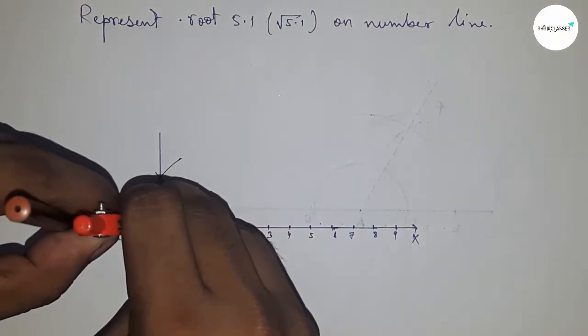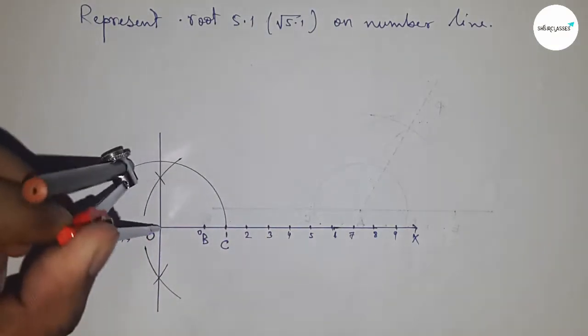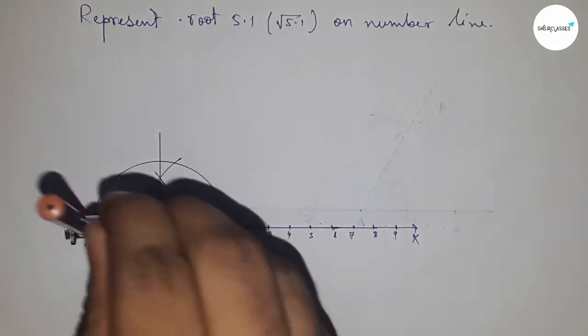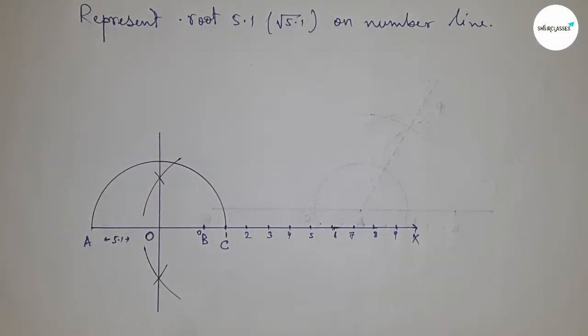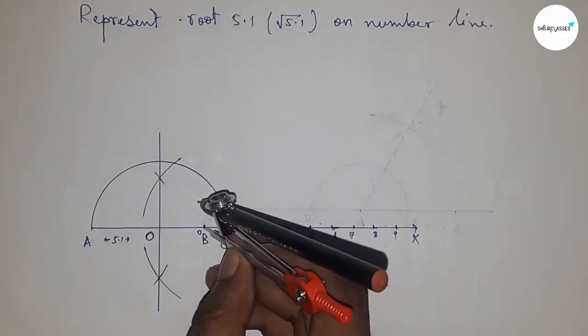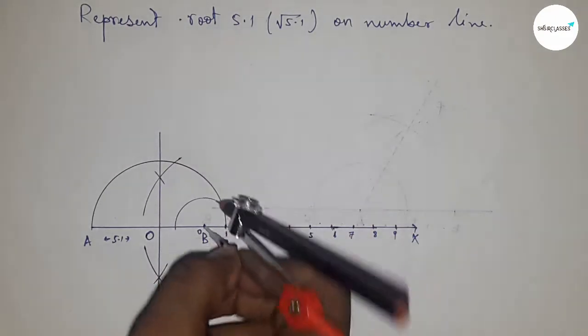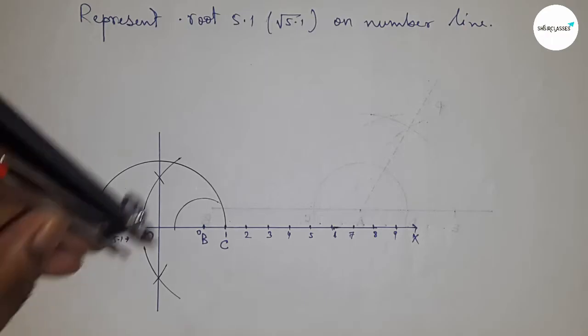Take the length OA and OC to draw a semicircle. Next, draw a 90-degree angle on point B by taking any length and drawing arcs.